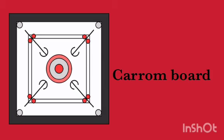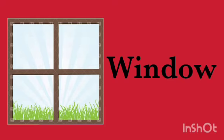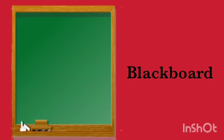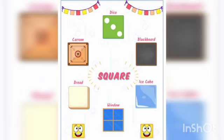Let's learn an example related to square. This is the picture of a carom board, and the shape of the carom board is square. Next is window — the shape of the window is square. And next is blackboard — the shape of the blackboard is square. I hope you will find some more objects related to the shape square.